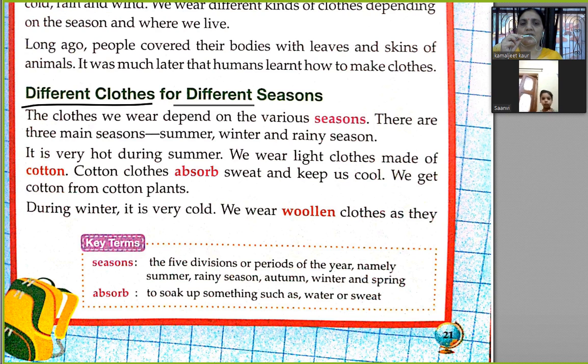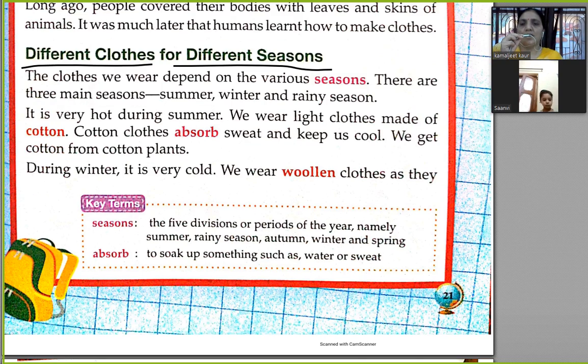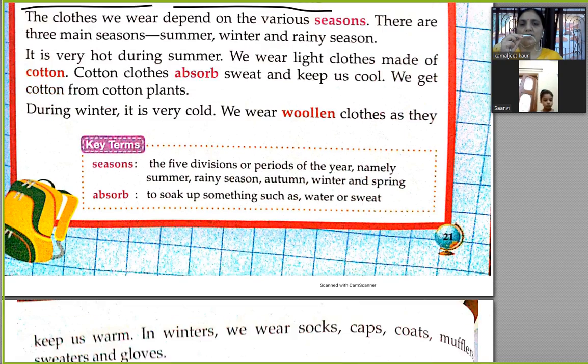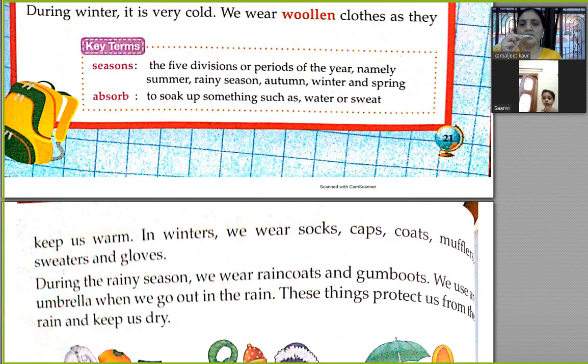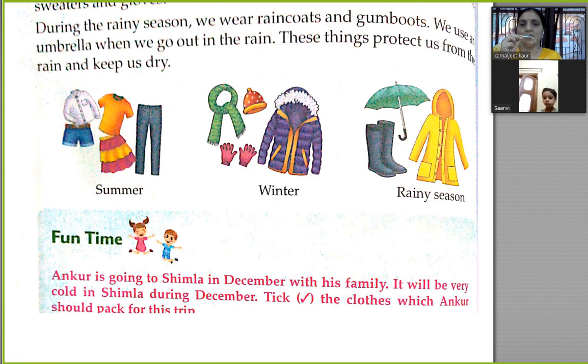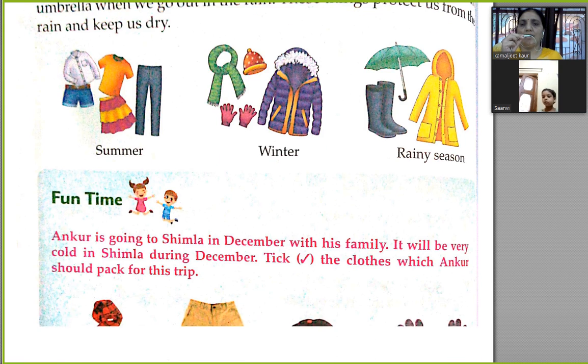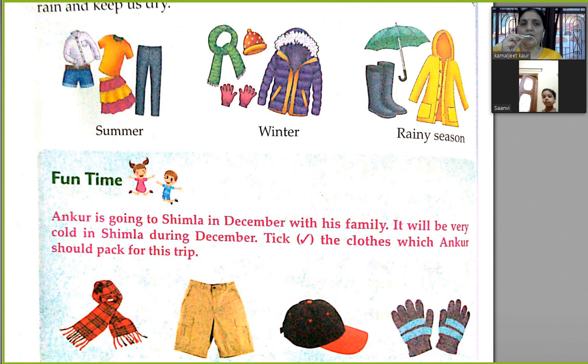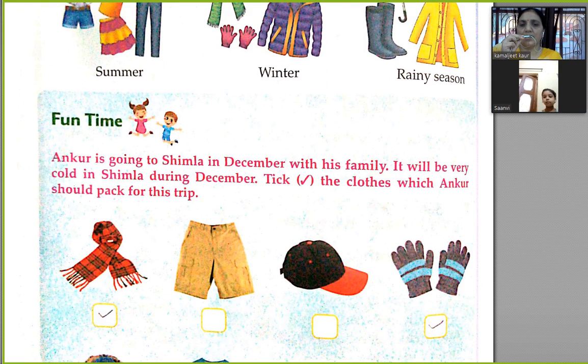For summer we wear cotton clothes. In winter we wear woolen clothes. In the rainy season we use a raincoat, gumboots, umbrella, etc.